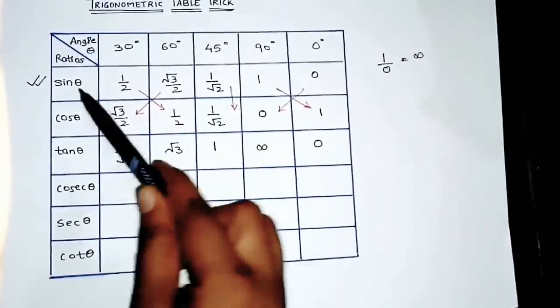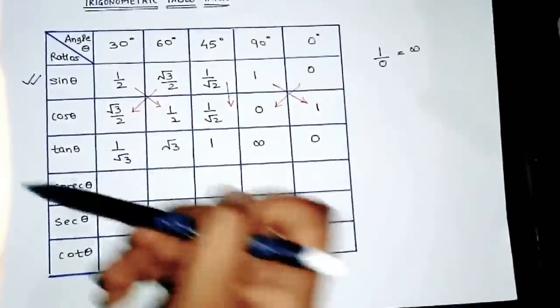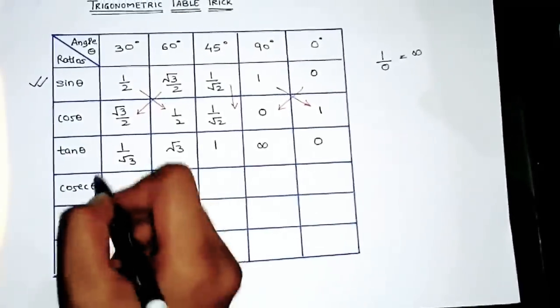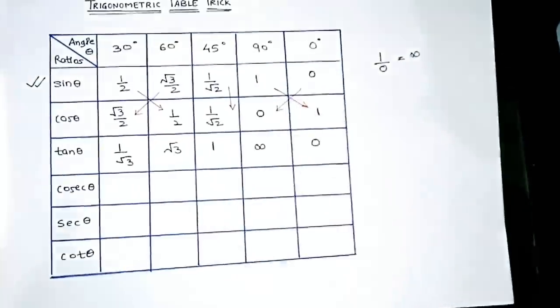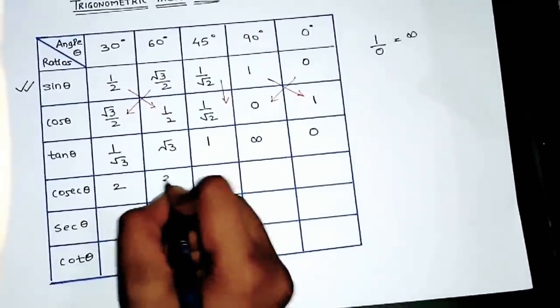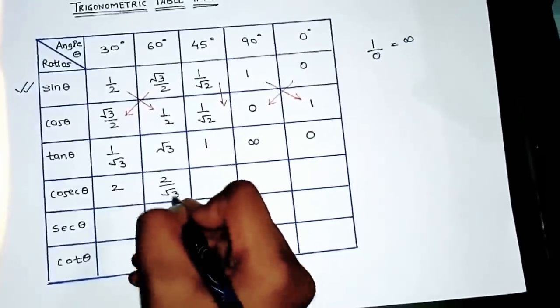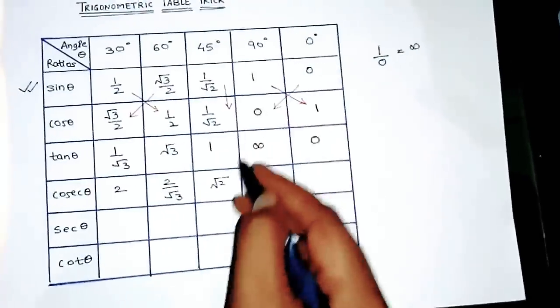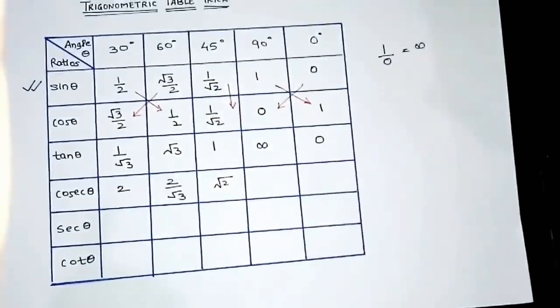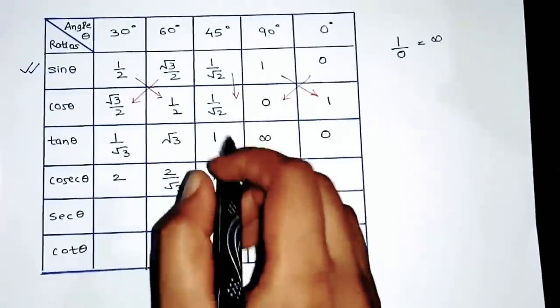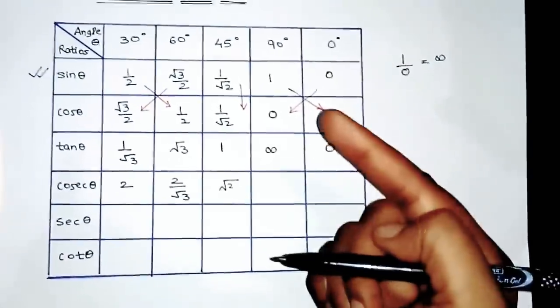And 0 upon 1 is, understood, it is 0 itself. Okay, now let's go to cosec, sec, and cot. For this thing we all know that it is reciprocal of sine. That is, cosec θ equals 1 upon sin θ. So we'll have to take all reciprocals of these things, right? So I'll write: 2, √3/2, √2.